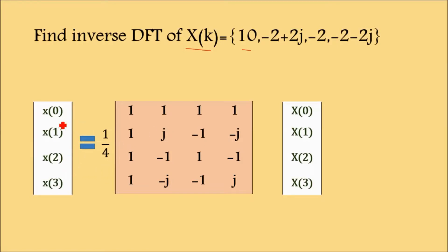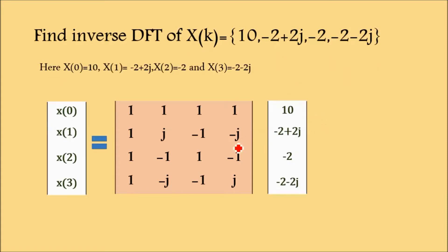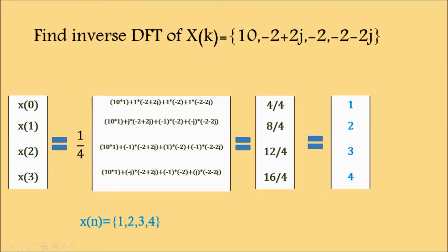For the Inverse DFT, the matrix is modified: the signs of j are interchanged (where it was -j in DFT, it becomes +j), and there is a multiplication by 1/4. Here x[n] is in the time domain (small letters) and X[k] is in the frequency domain (capital letters). We place the known DFT values: X[0]=10, X[1]=-2+2j, X[2]=-2, X[3]=-2-2j.